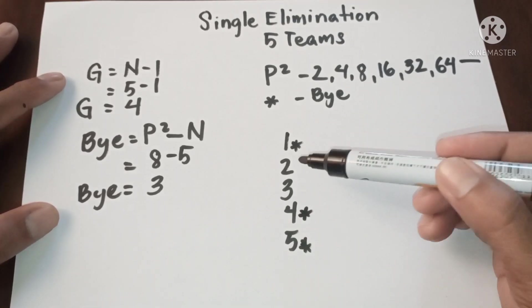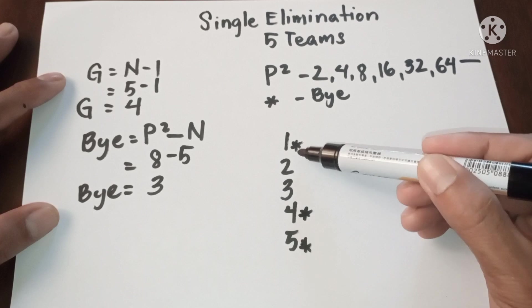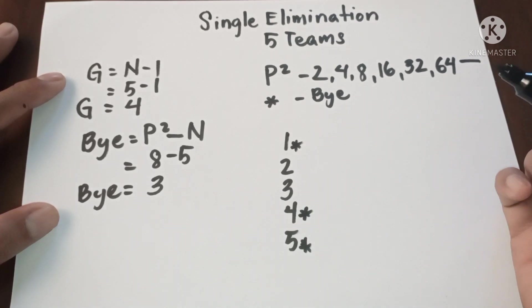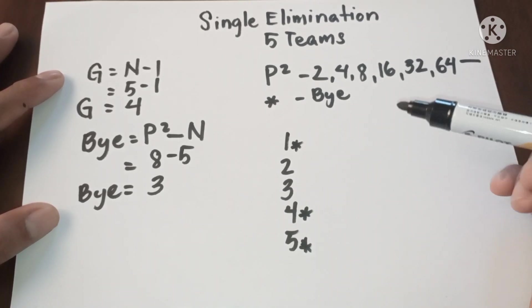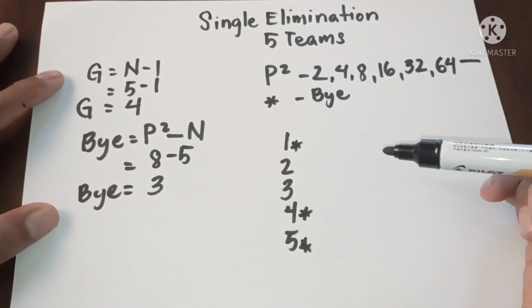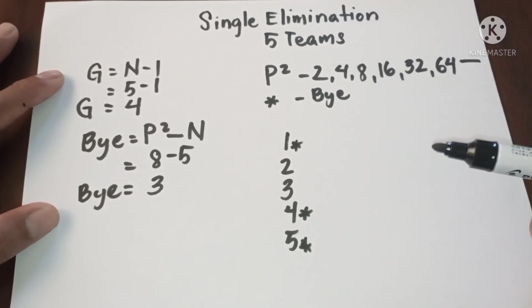Meaning we have two competing teams in the first round: two and three. Let's see what will happen on our diagram for five teams.